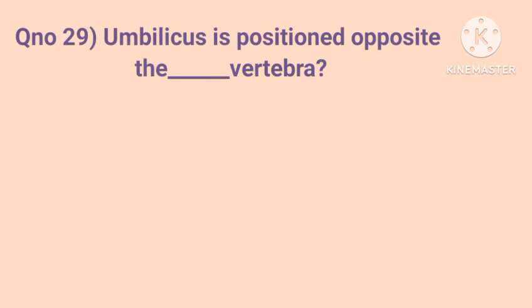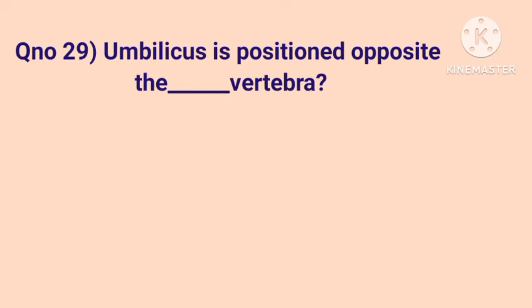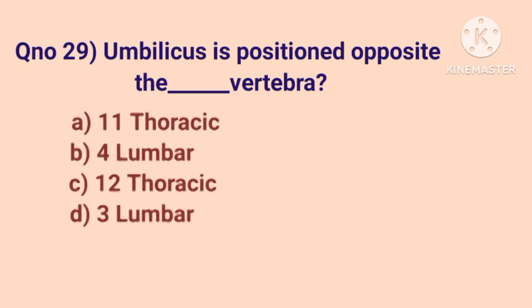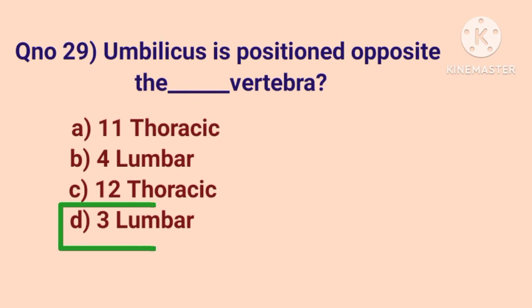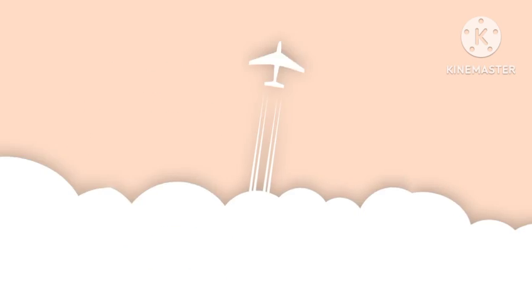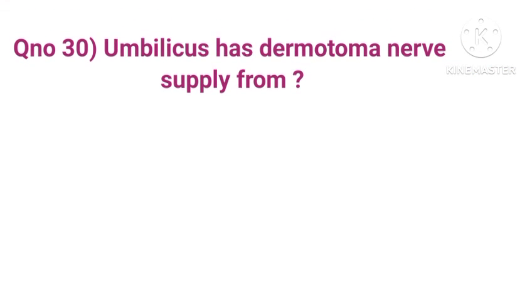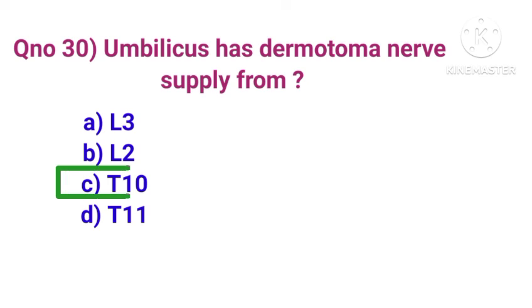Question number 29. Umbilicus is positioned opposite to the dash vertebra. Correct answer is option D, L3. Question number 30. Umbilicus has dermatomal nerve supply from T10.